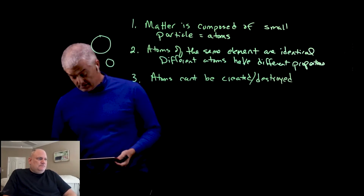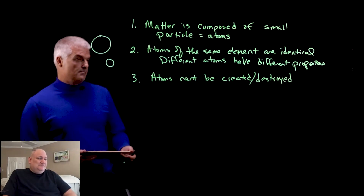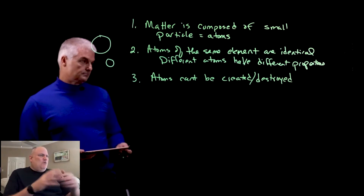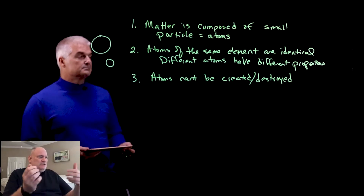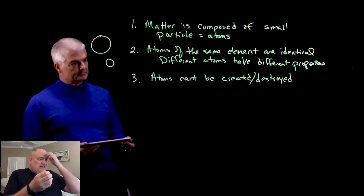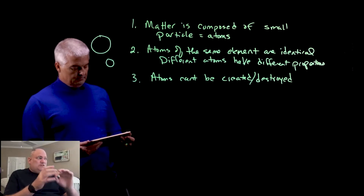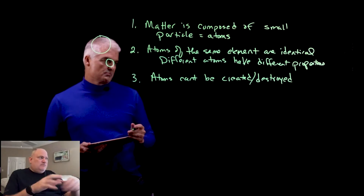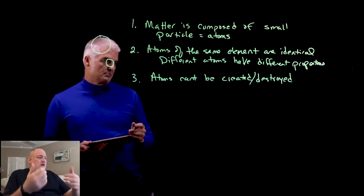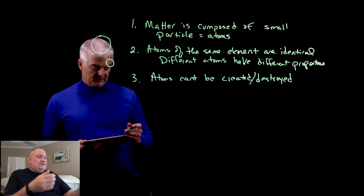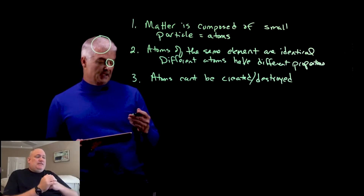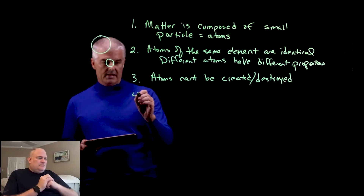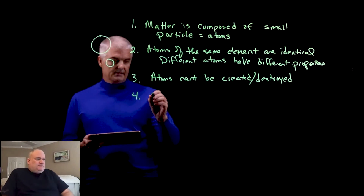Point three: atoms can't be created or destroyed. That probably caused controversy because people thought you could light things on fire and destroy them. But the idea that the individual particles couldn't be destroyed is a big deal — in fact, there's a law of the universe that says matter cannot be created nor destroyed, it can only change forms. When you burn something it seems destroyed, but the atoms just rearrange.